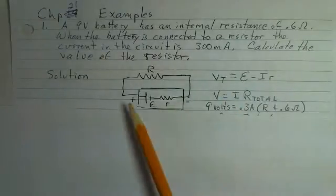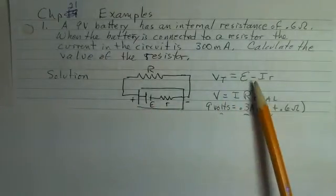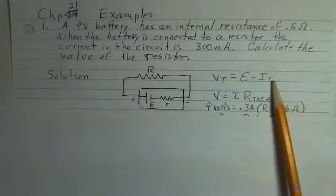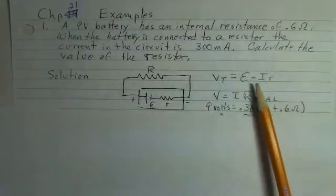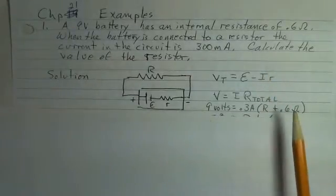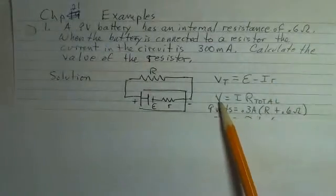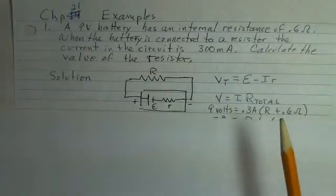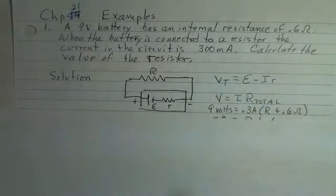We know that the terminal voltage of a battery is equal to the EMF minus the current times the internal resistance. Current times internal resistance is a voltage drop inside the battery. The potential difference is equal to current times the total resistance.